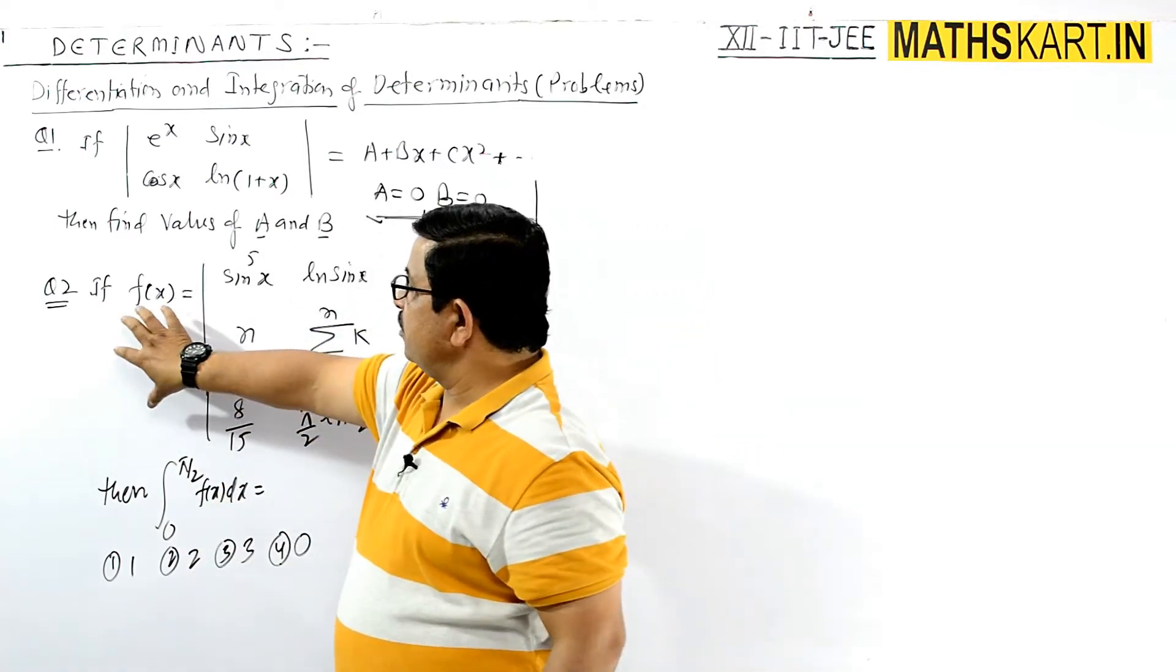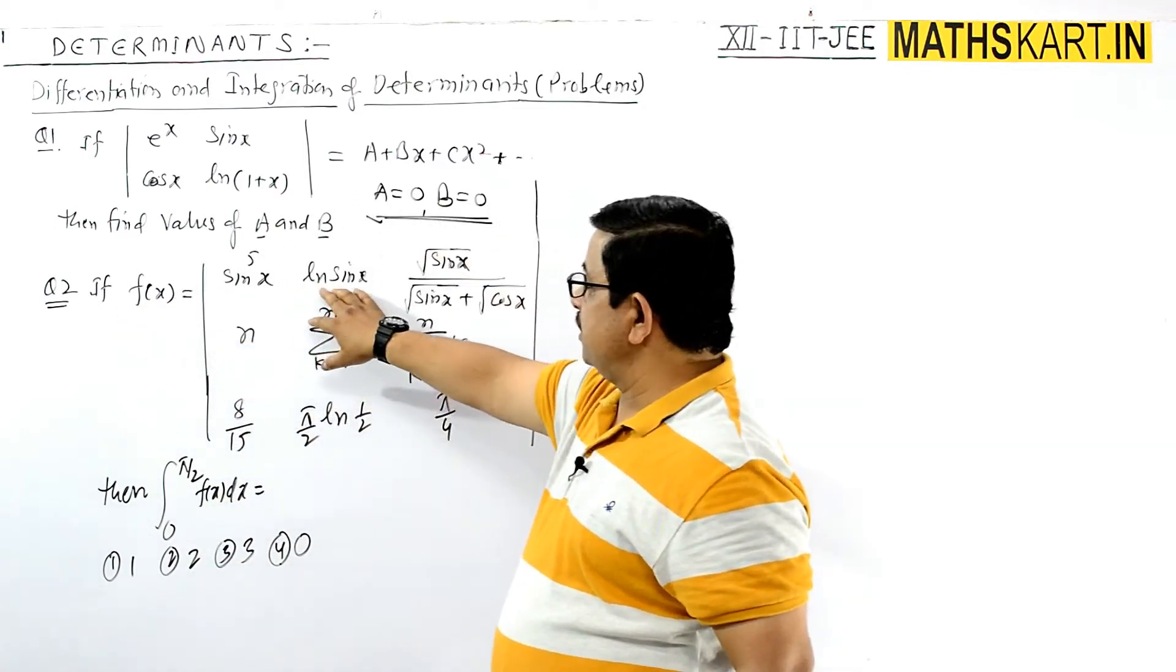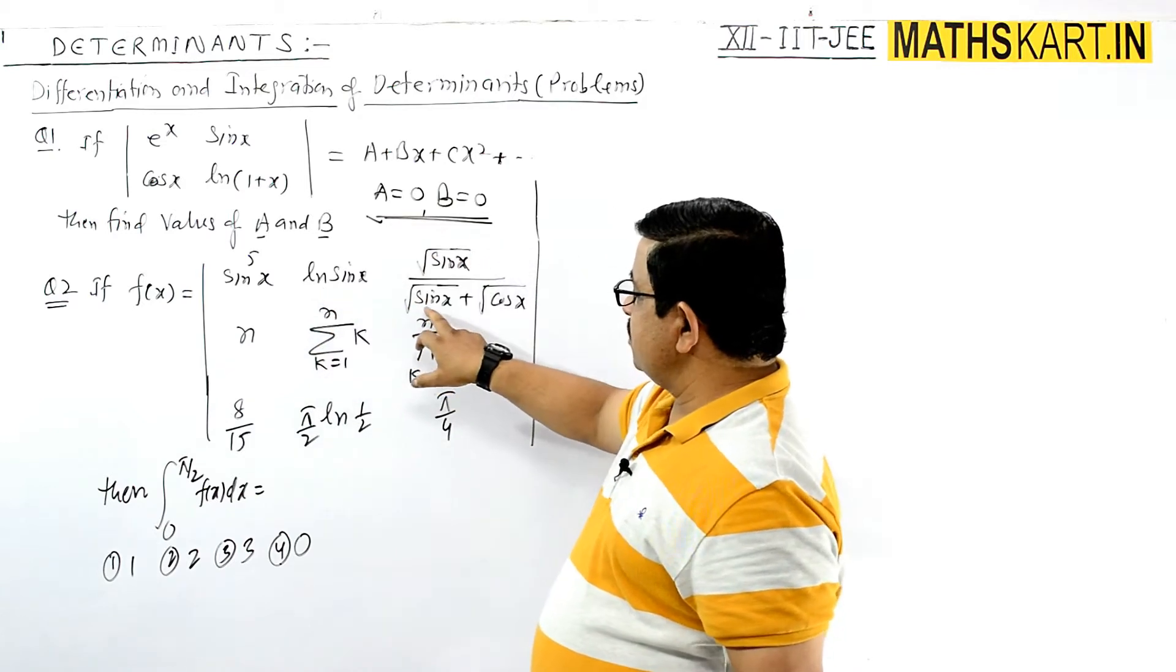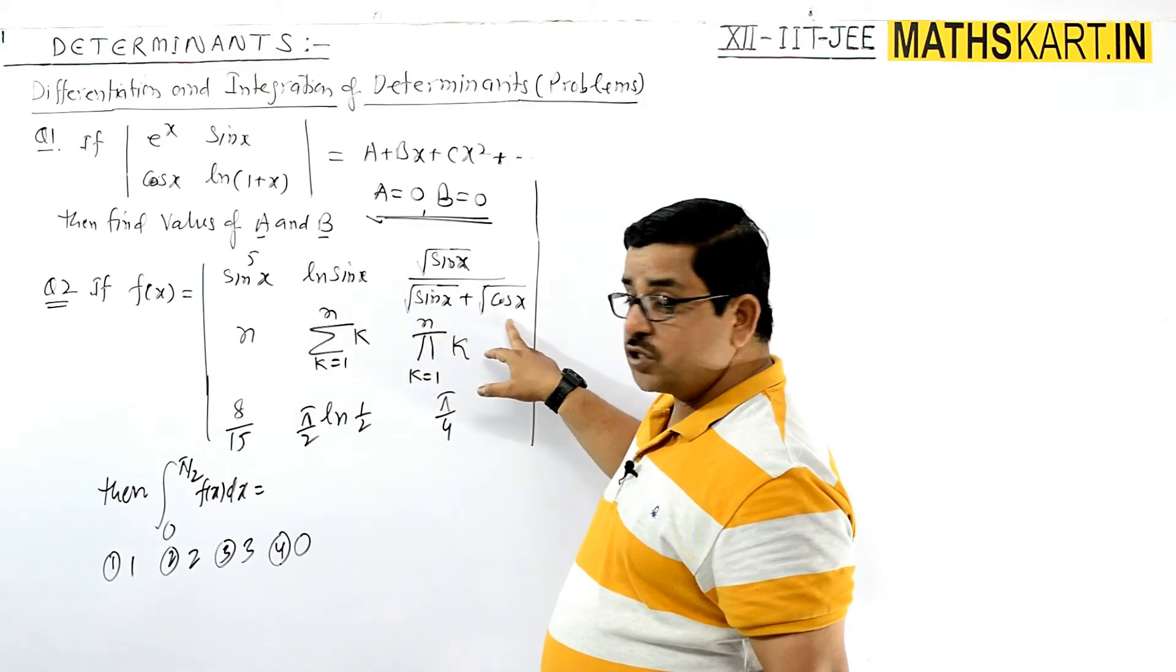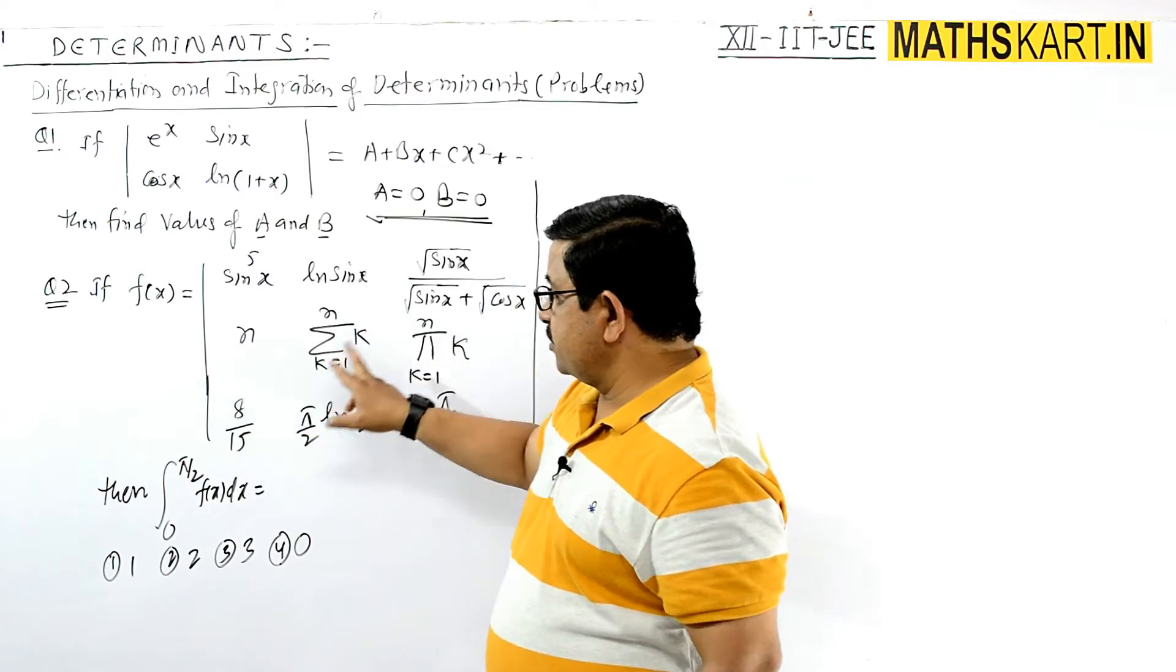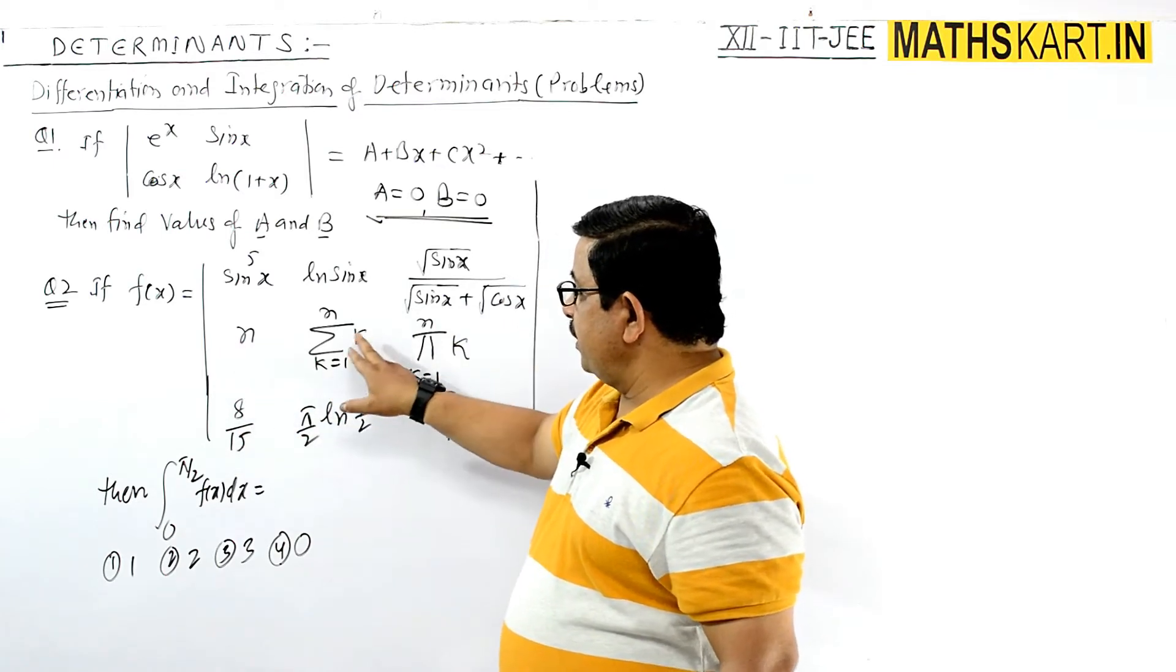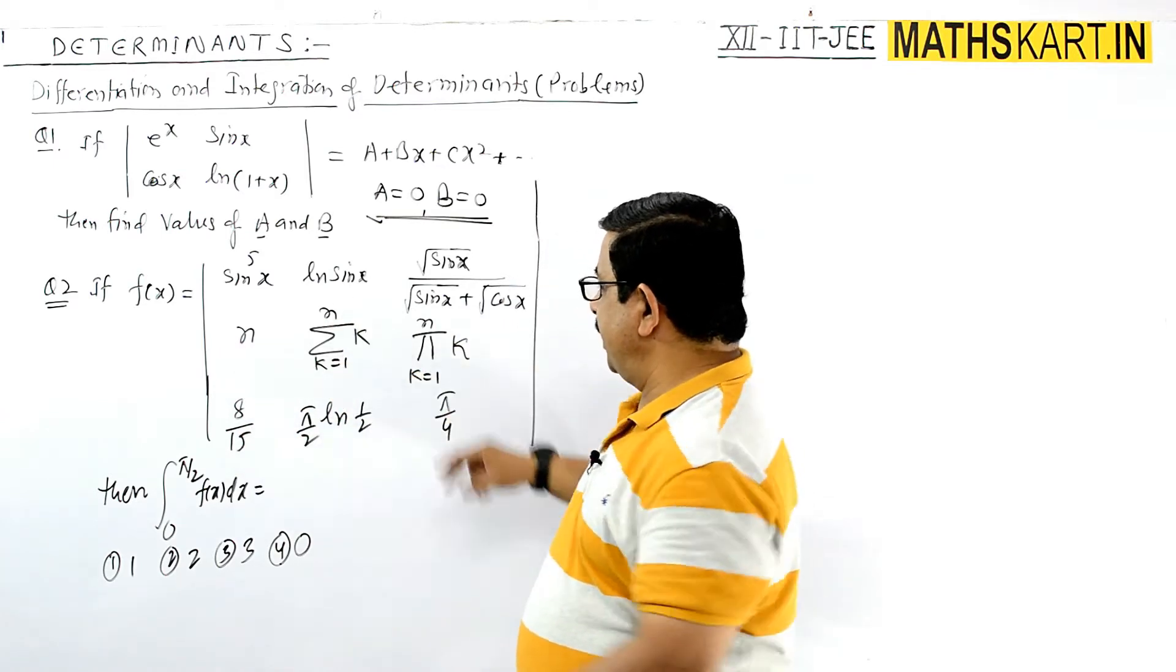See, the function fx is given: sin 5x, ln sin x, root sin x divided by root sin x plus root cos x, and summation of k, k equals 1 to n is given here.